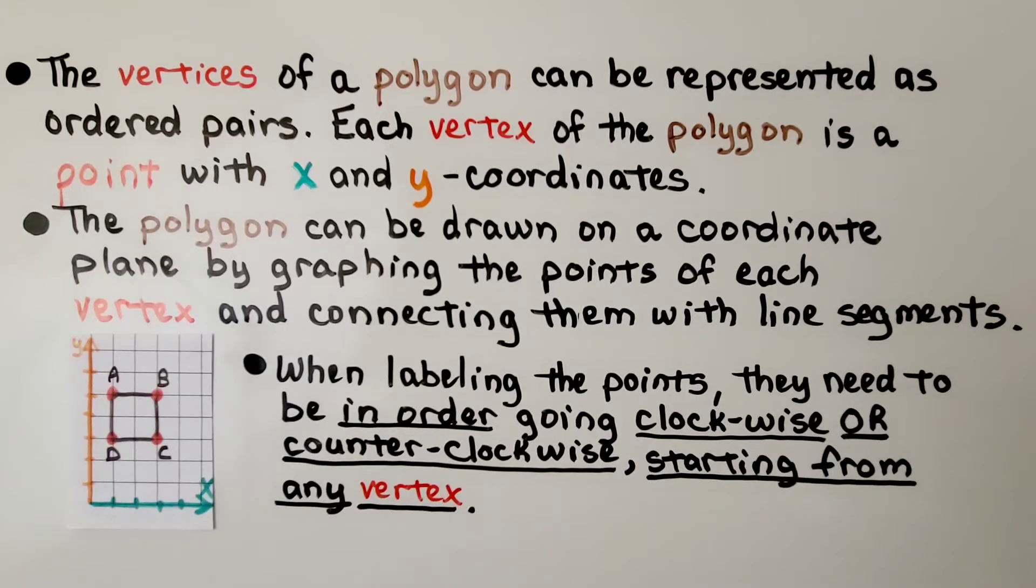The vertices of a polygon can be represented as ordered pairs. Each vertex of the polygon is a point with x and y coordinates. The polygon can be drawn on a coordinate plane by graphing the points of each vertex and connecting them with line segments.